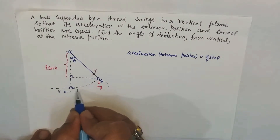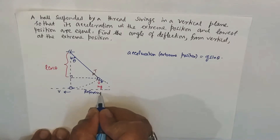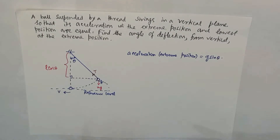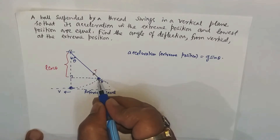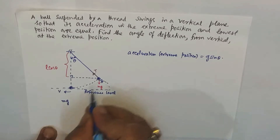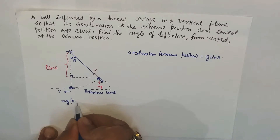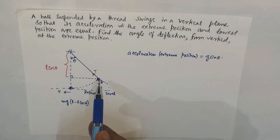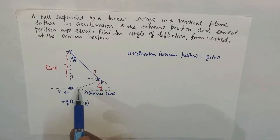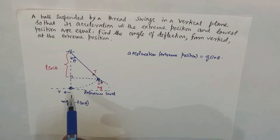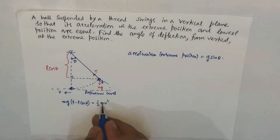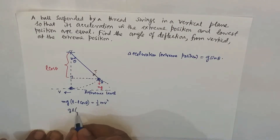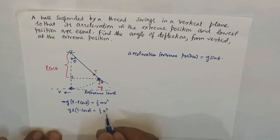Taking the lowest position as the reference level, the gravitational potential energy there is zero. At the extreme position, the gravitational potential energy is mg times (L minus L cos theta), and there is no kinetic energy since the particle is at rest. At the lowest position, all energy is kinetic: half M v squared. Cancelling M and simplifying: g(1 minus cos theta) equals half v squared.